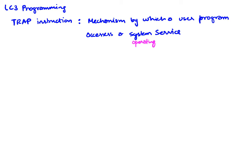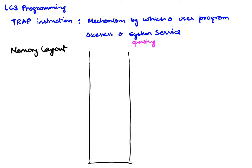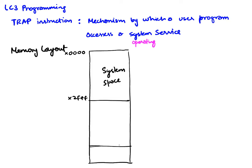When we looked at the memory layout of the LC3 machine, we said that memory is divided into two parts. Locations 0x0000 all the way up to 0x2FFF are what we call system space, and locations from there up to a certain point is called user space. There's also a region at the bottom which we call the IO mapped region.